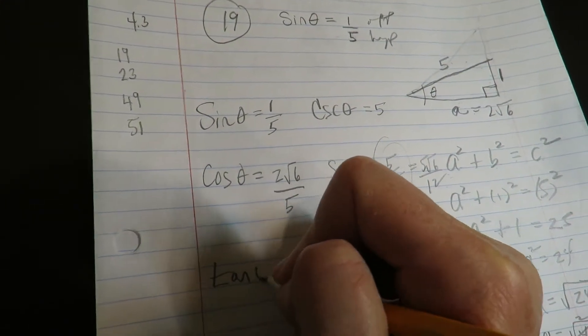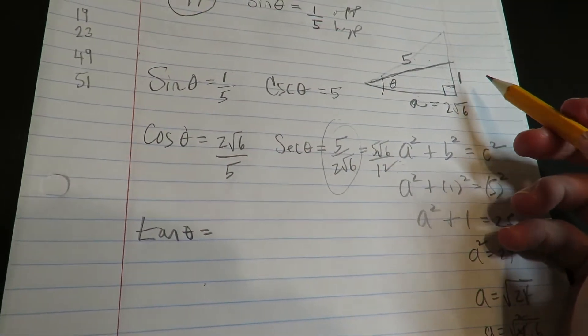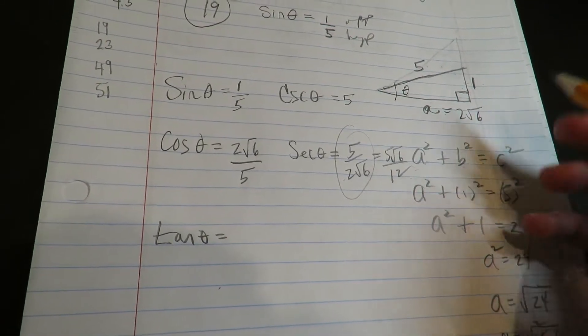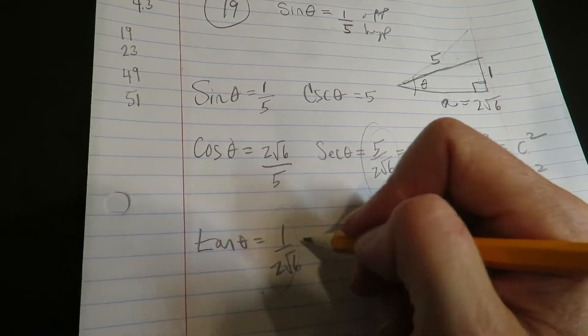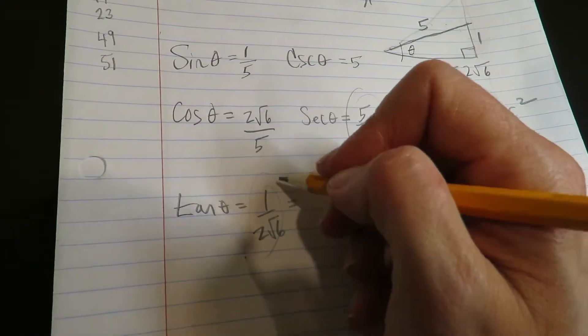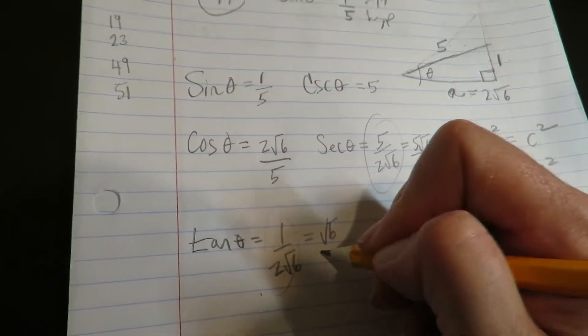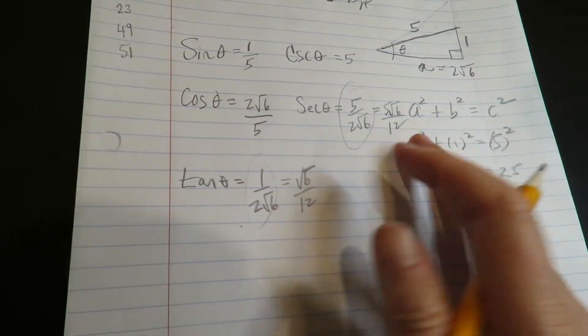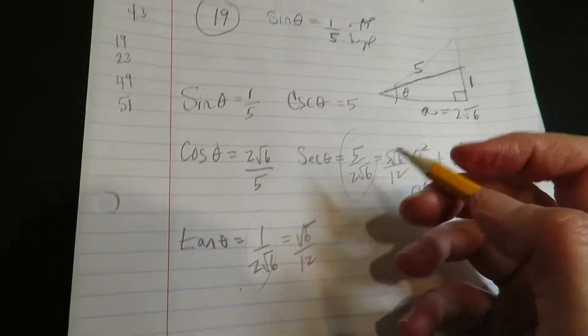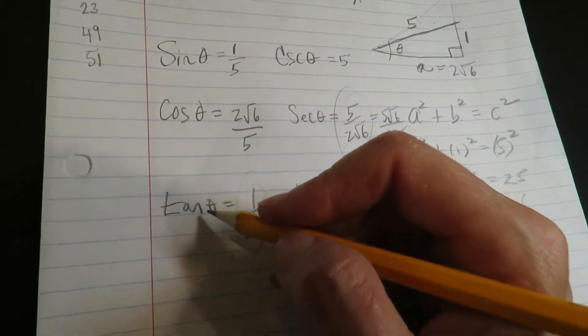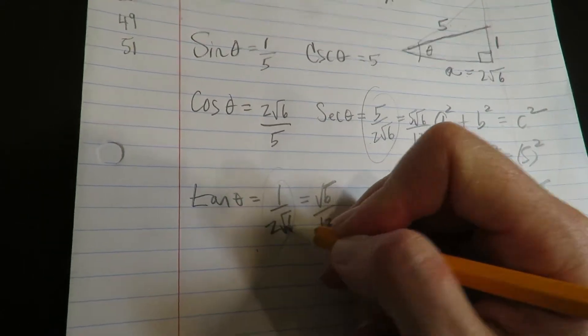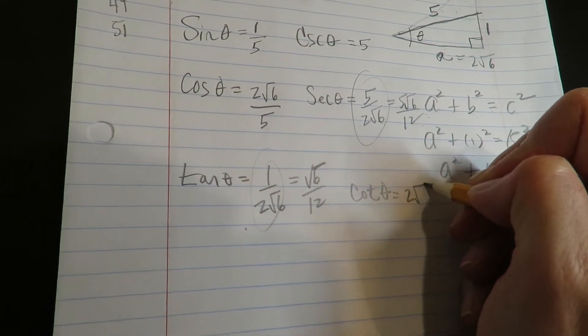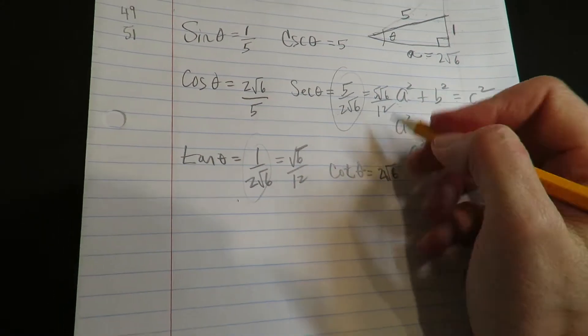All right, let's do tangent. Tangent is the opposite over the adjacent. I'm good with this. If you rationalize, you multiply it up and down by radical 6. So you have radical 6 over 12. The reciprocal of the tangent is the cotangent, which is the flip of that, which would be 2 radical 6 over 1.